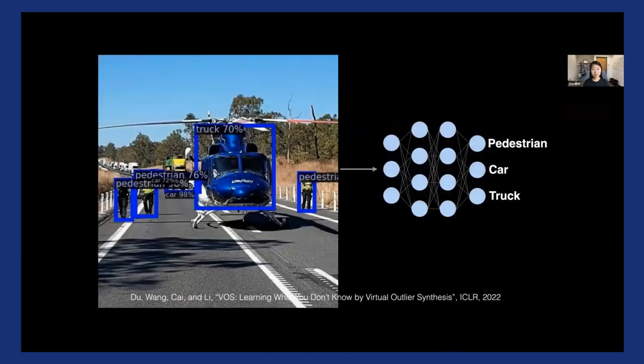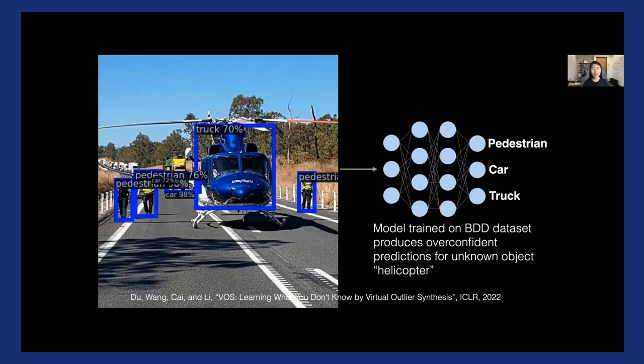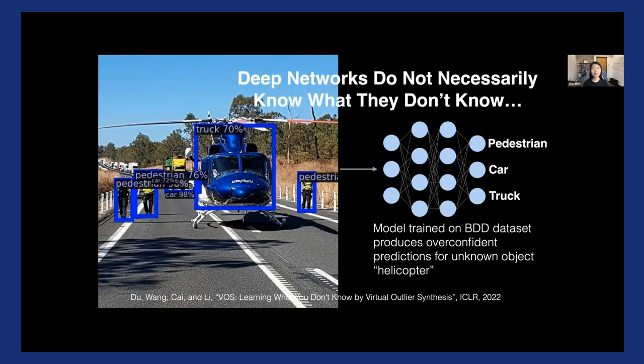For example, in our recent paper, we took this image from the MS COCO dataset and ran it through the self-driving car model that was just trained on BDD. And so here you can see the model can produce overconfident predictions for this unknown object, the helicopter, which was never exposed to this model during the training time. And so you see that it's actually being predicted into a truck, which is one of the distribution categories. So in other words, deep networks do not necessarily know what they don't know. And this has raised significant concerns on models reliability and safety.